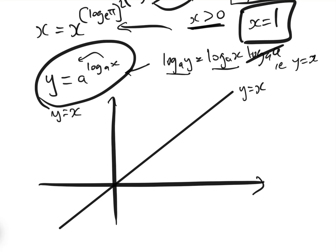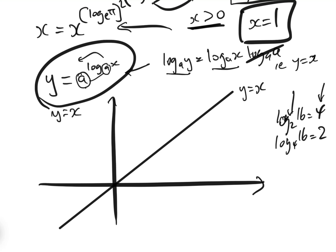What's quite fascinating is that when both a values are equal, we get the straight line y equals x. Note that log_2(16) equals 4 and log_4(16) equals 2. When you increase the base, the answer reduces.